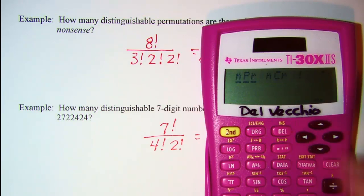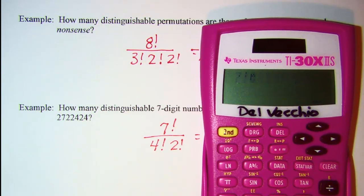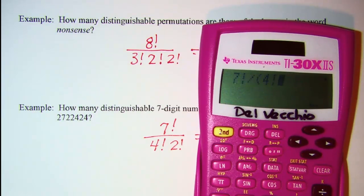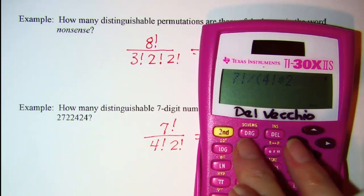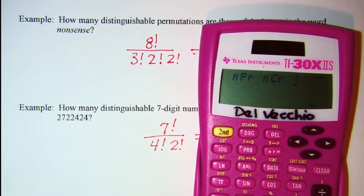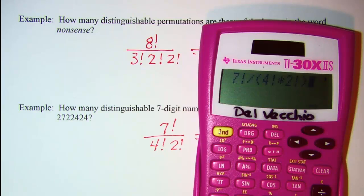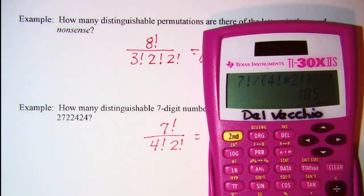7 factorial divided by, and again I need parenthesis since I have more than one factor down here, 4 factorial times 2 factorial. I'll close up my parenthesis, and I have 105.